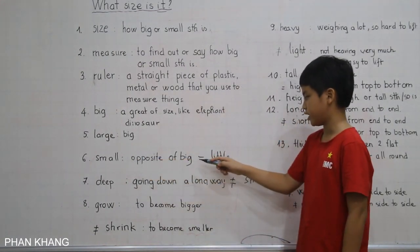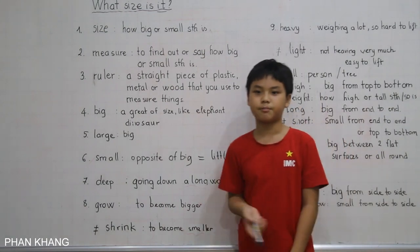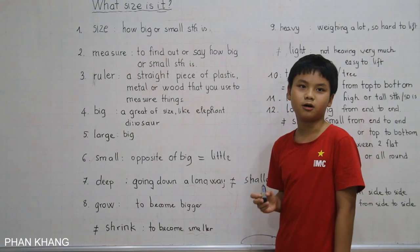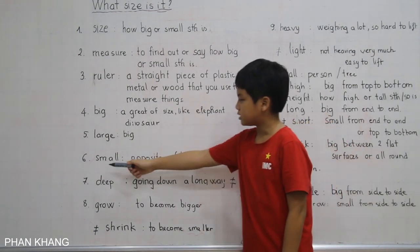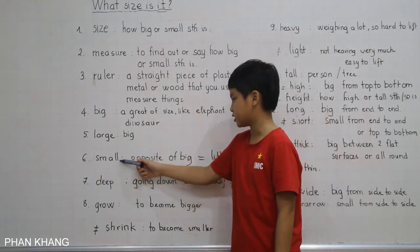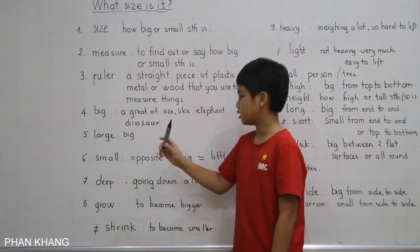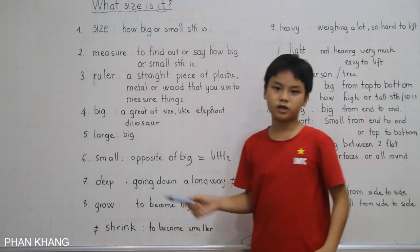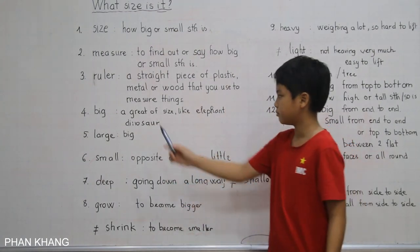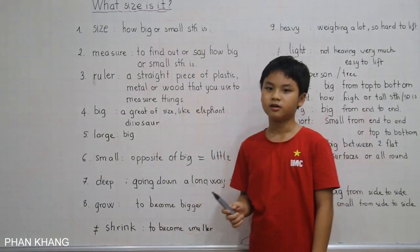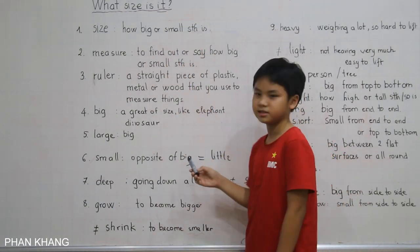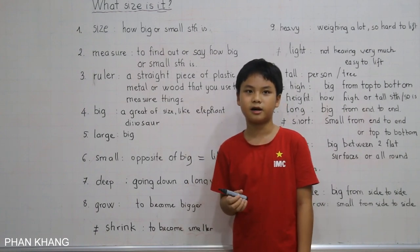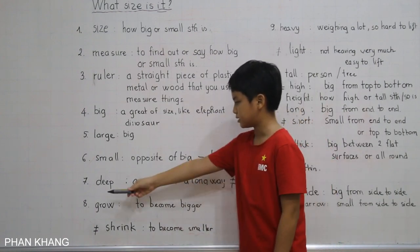Small means the opposite of big, which is little. If you see a mouse in a cartoon, you know it is very small — so we call that small. If we say smaller, that is the comparative adjective of small. So smaller and bigger are used for comparing. We might say an elephant is bigger than a mouse, but an elephant is smaller than a whale.